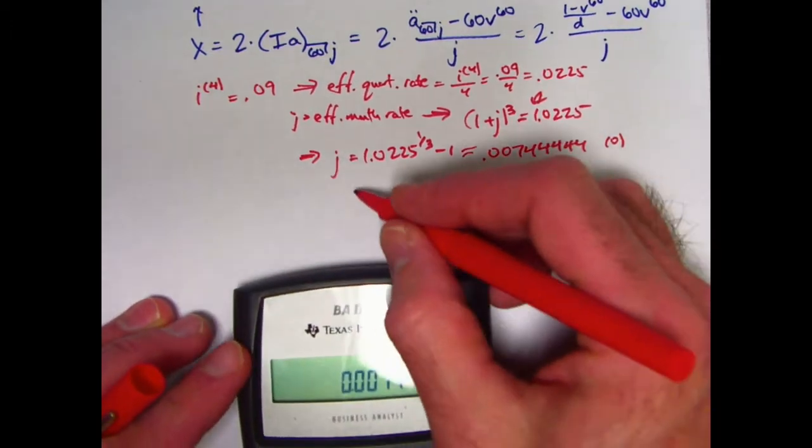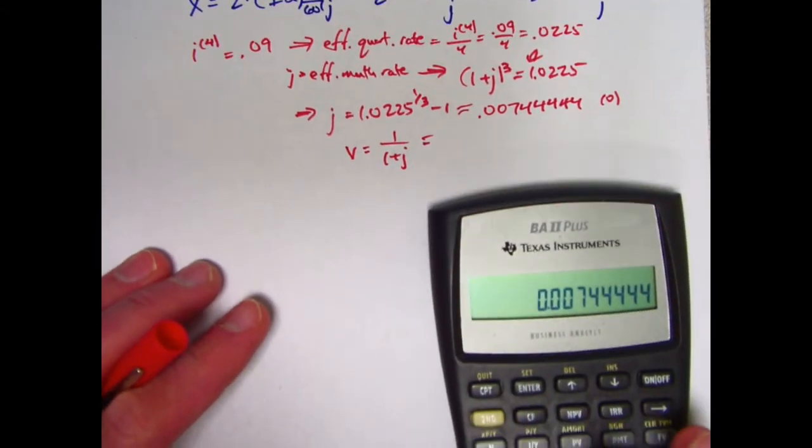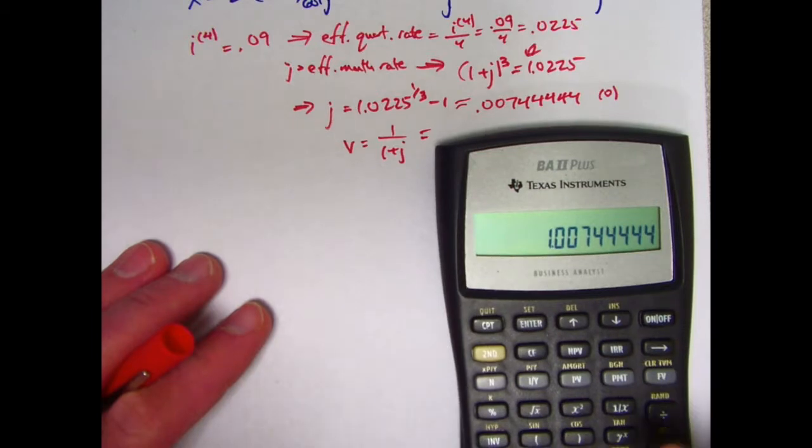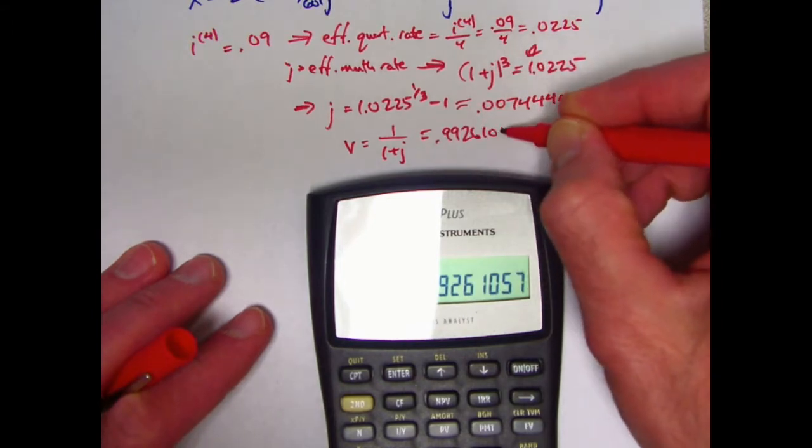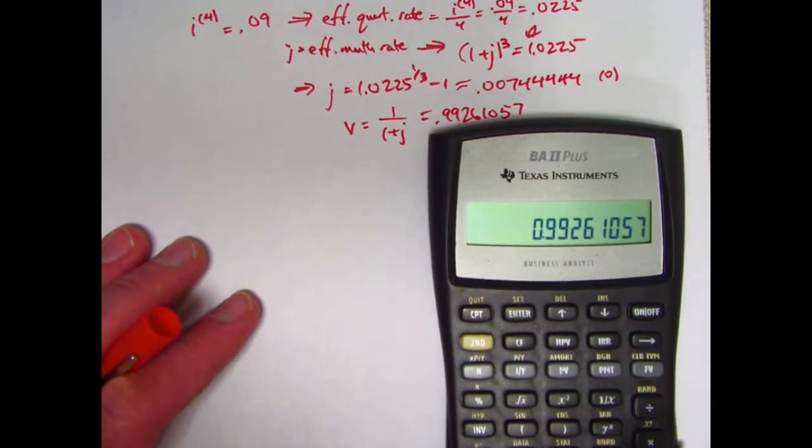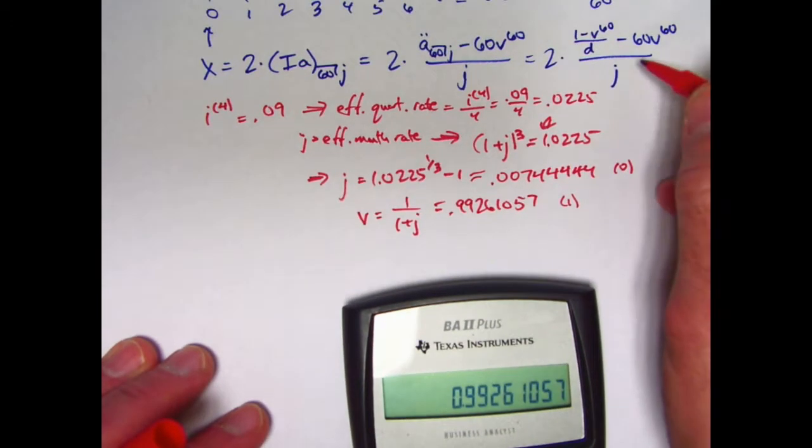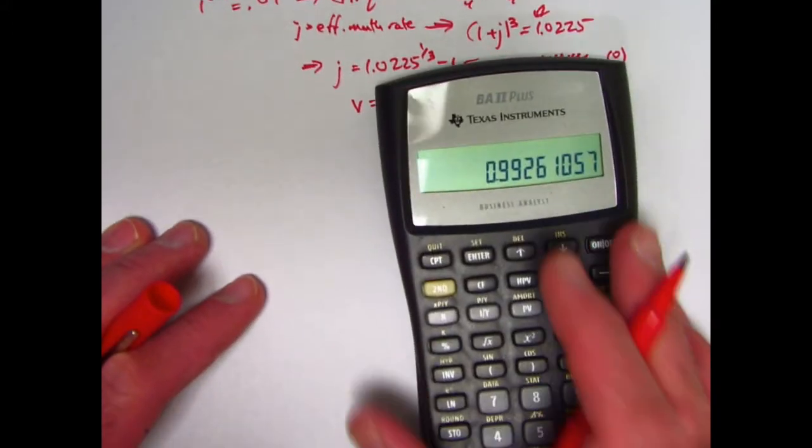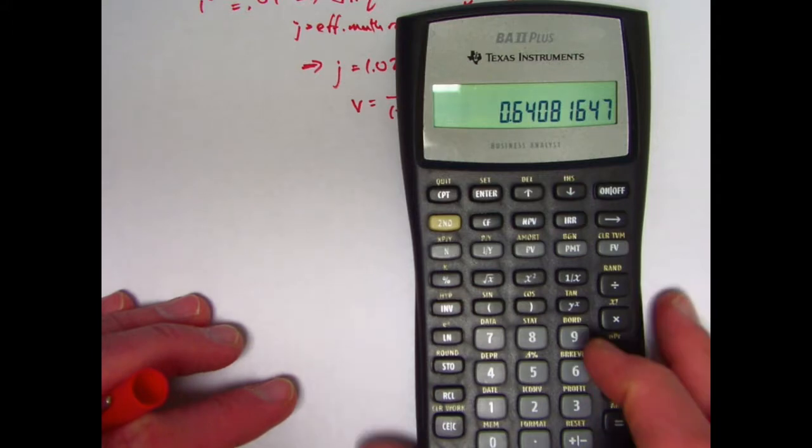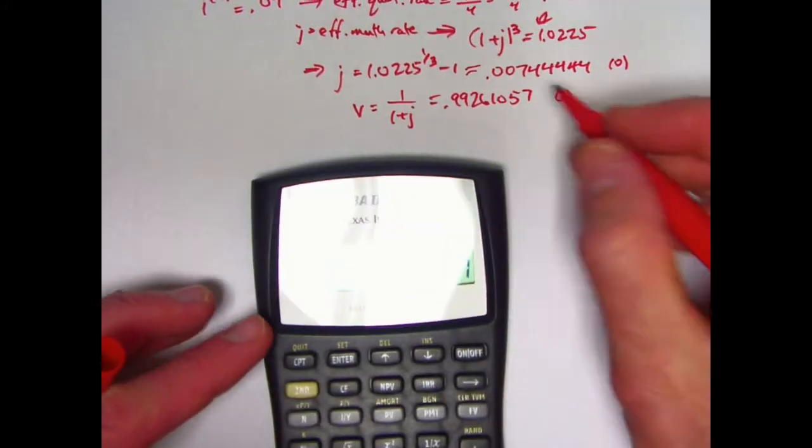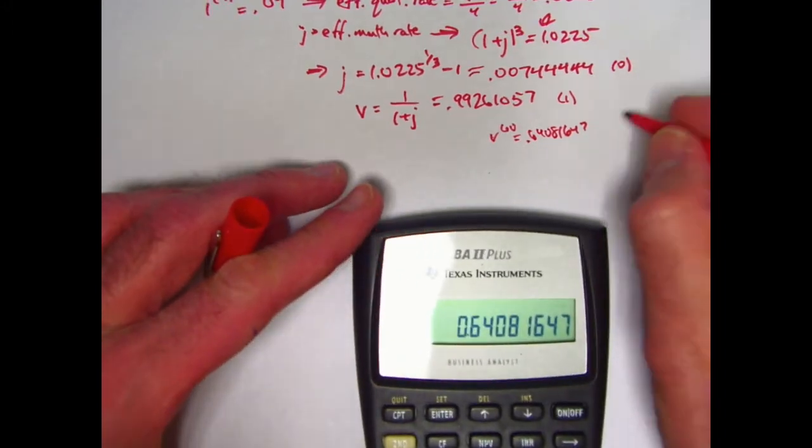From that we can figure out V. V is going to be 1 over 1 plus J. V is going to be the monthly discount factor. Add 1 to this, take its reciprocal. V is about 0.9926. I'll store it in register 1. I'm going to need V to the 60th, and I need to use it a couple of times. Let's find V to the 60th. Raise this to the 60th power. Let's store that in register 2. V to the 60th is about 0.64081647.